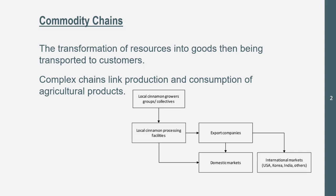In here we have cinnamon growers and collectives. That goes into the facilities, then that goes into exporting, and then the markets — the domestic markets and then the international markets. This is a commodity chain. They can be this simple, or they can be extremely complex, kind of like a family or a language tree, as we talked about in the past.